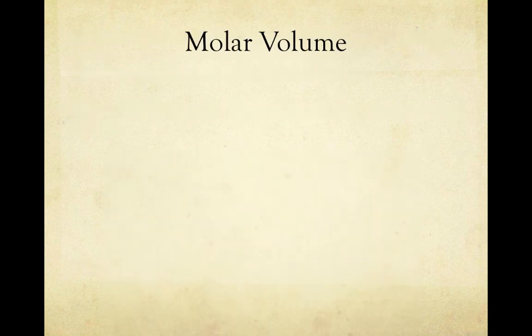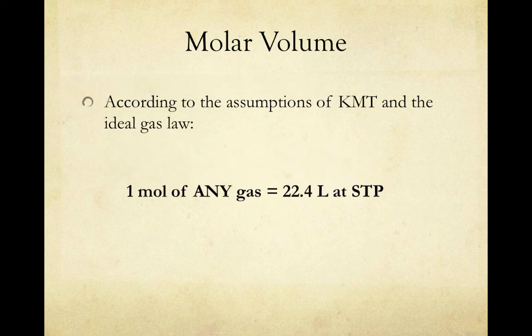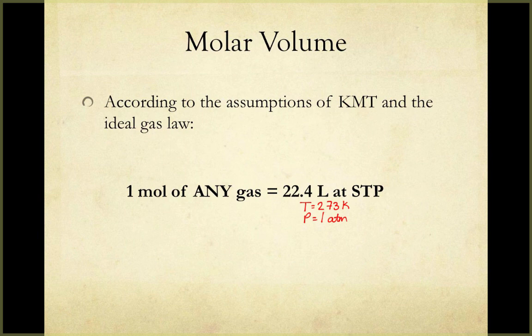This allows us to define the concept of molar volume. According to the assumptions of the ideal gas law, one mole of any gas will occupy 22.4 liters at STP — standard temperature and pressure — where standard temperature is 273 Kelvin and standard pressure is 1 ATM. No matter what gas you have, as long as it's at 273 K and 1 ATM, one mole of that gas will occupy 22.4 liters. Just as molar mass converts between mass and moles, molar volume converts between volume of a gas and number of moles.